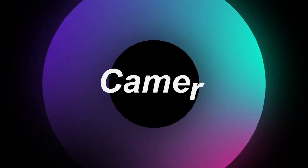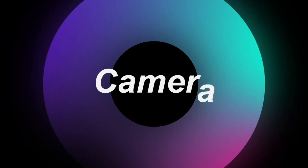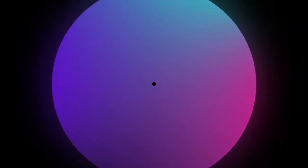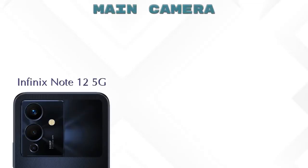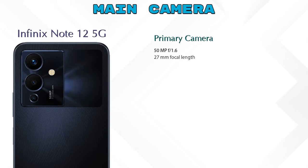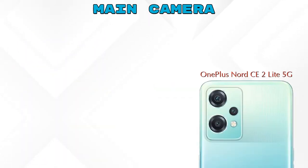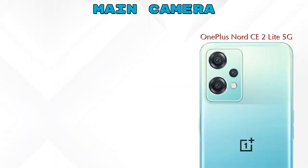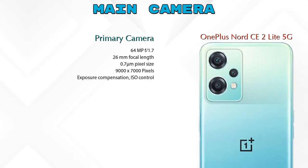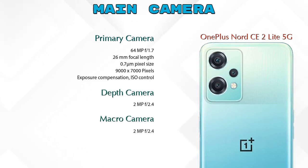Now let's look at cameras. For the rear camera, the Note 12 5G has two cameras: a primary camera and a depth camera. The CE2 Lite 5G has three cameras: a primary camera, a depth camera, and a macro camera.